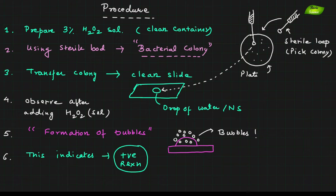To summarize the procedure: step one is preparation of the 3% H2O2 solution, stored carefully. Then use the bacteriological loop to transfer the colonies and mix with H2O2 solution. If there is bubble formation, the reaction is positive.